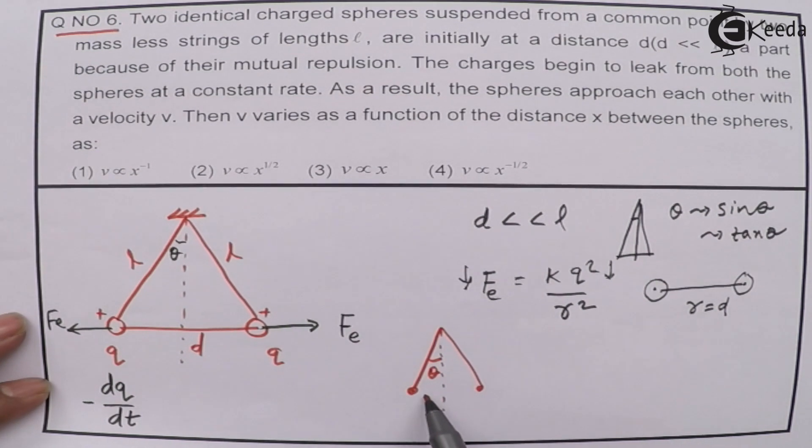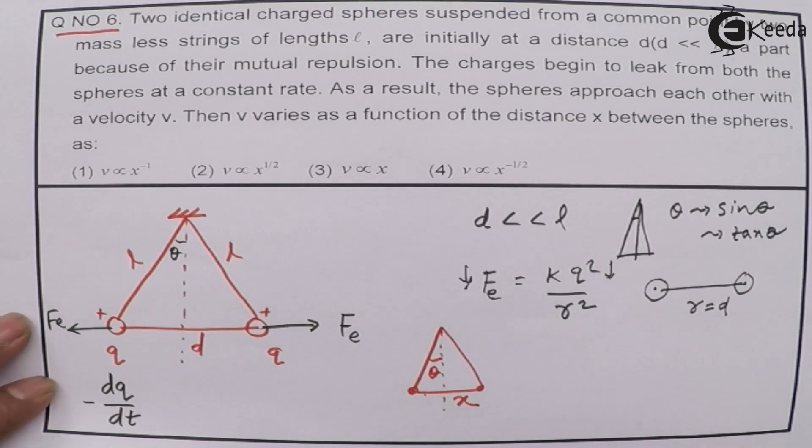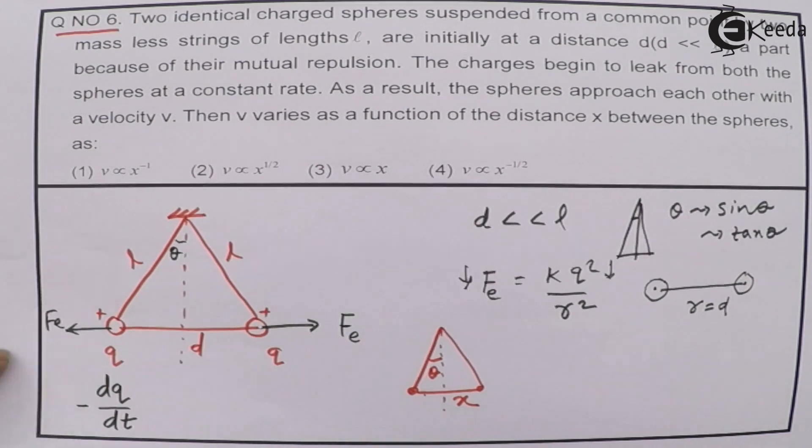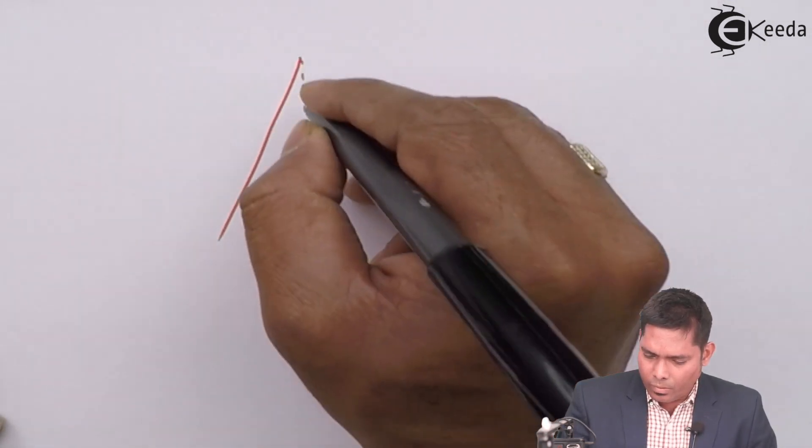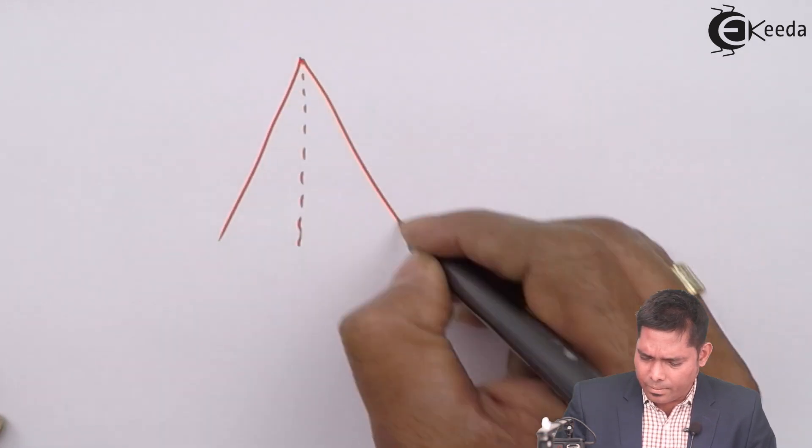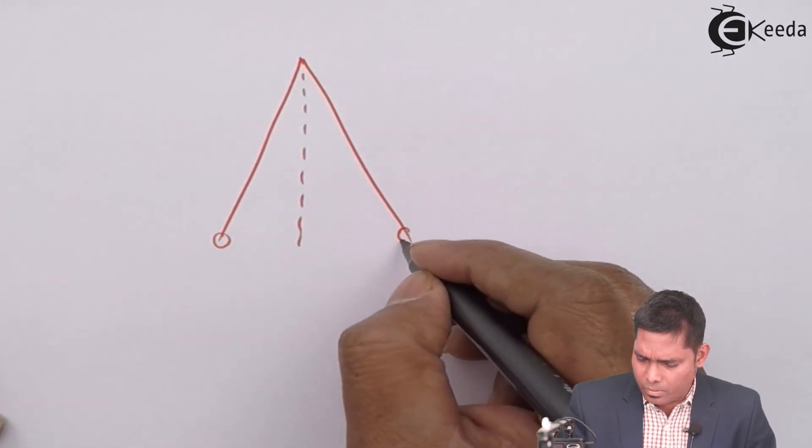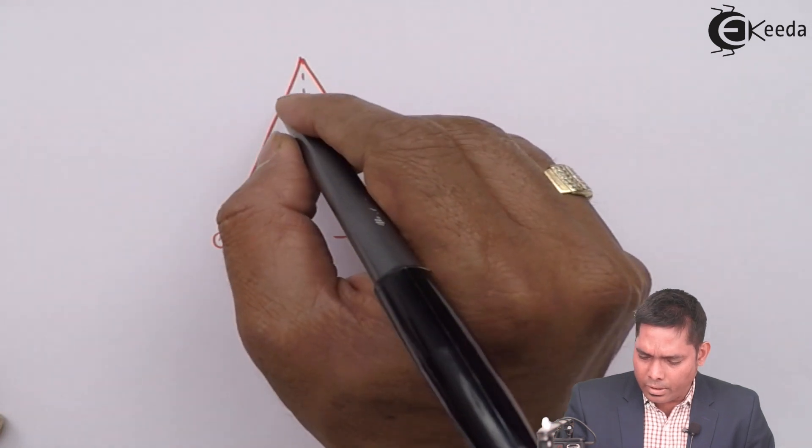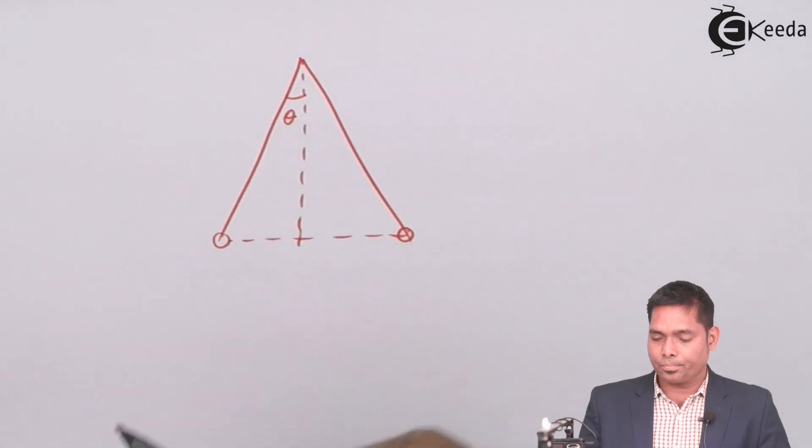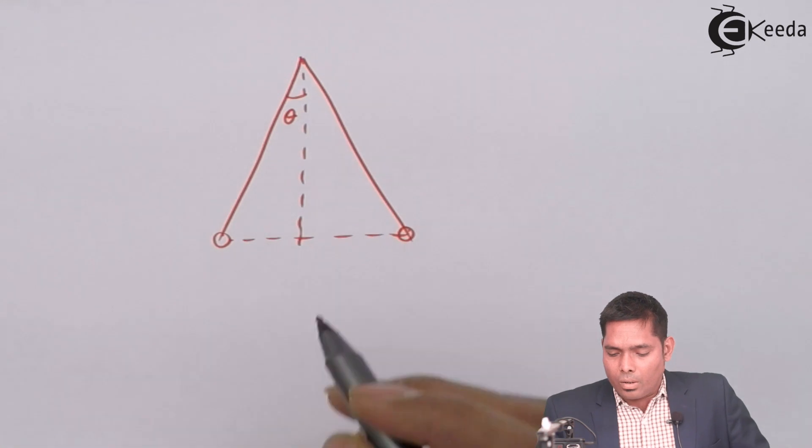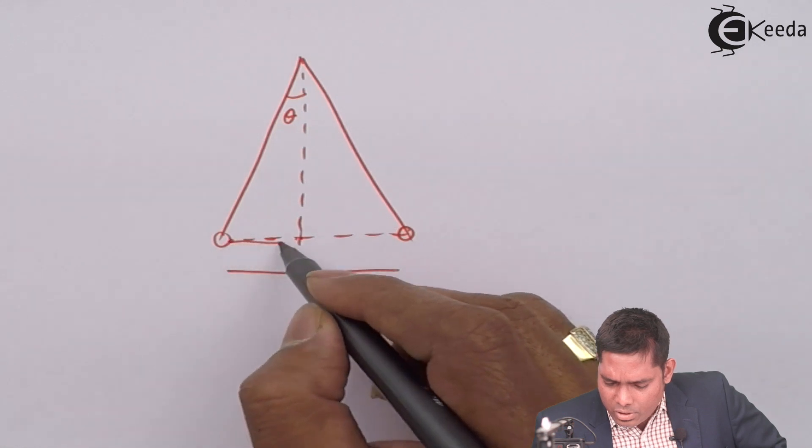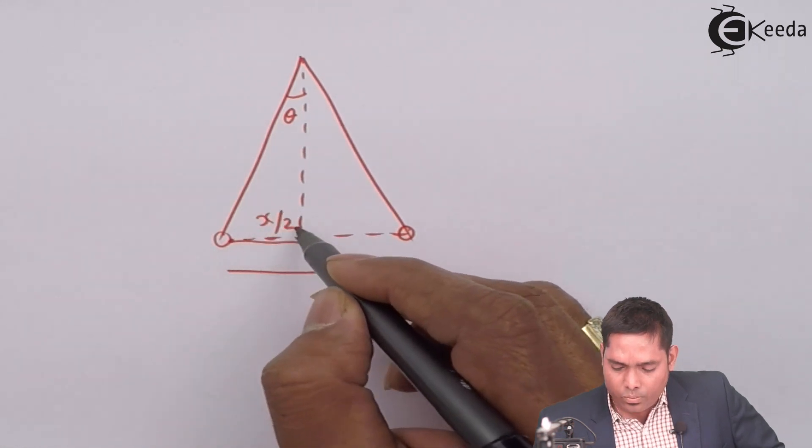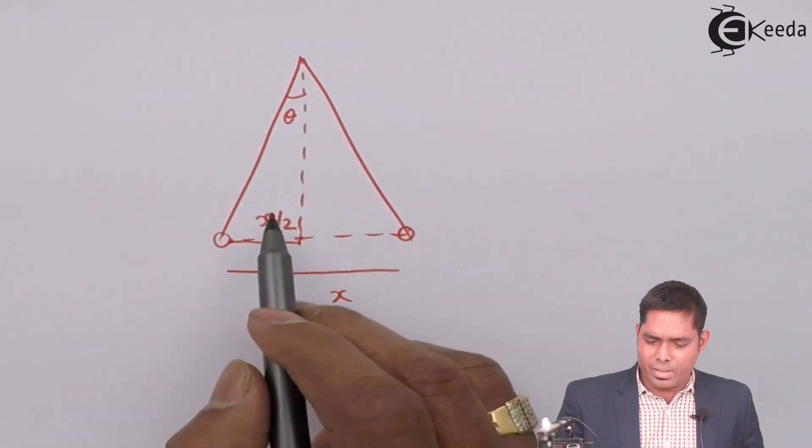Then theta, where the distance of separation is X. So if that is the case, I'll draw here. Both sides it is like that. And this is theta. This distance is now X. And this distance is obviously X by 2.